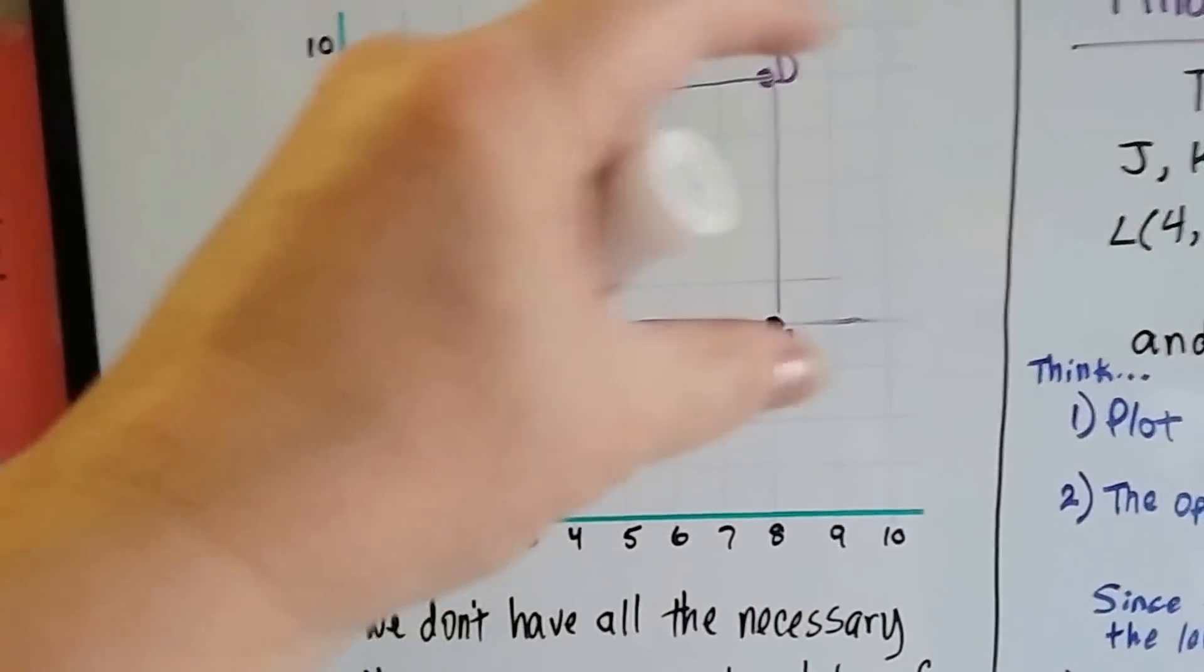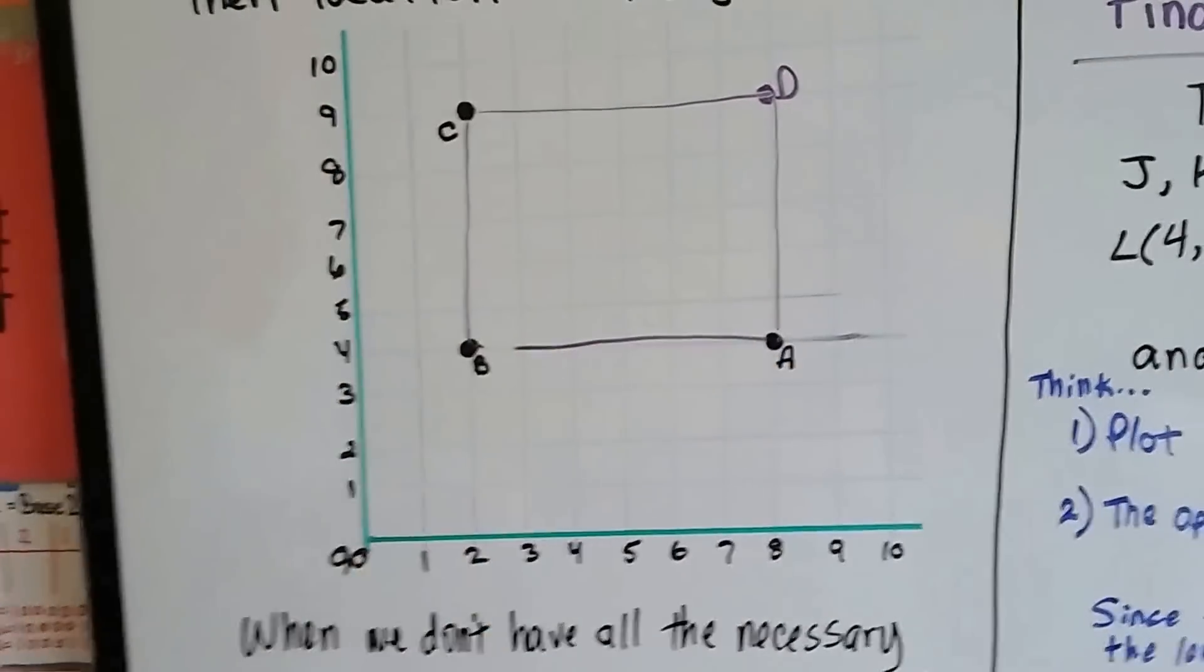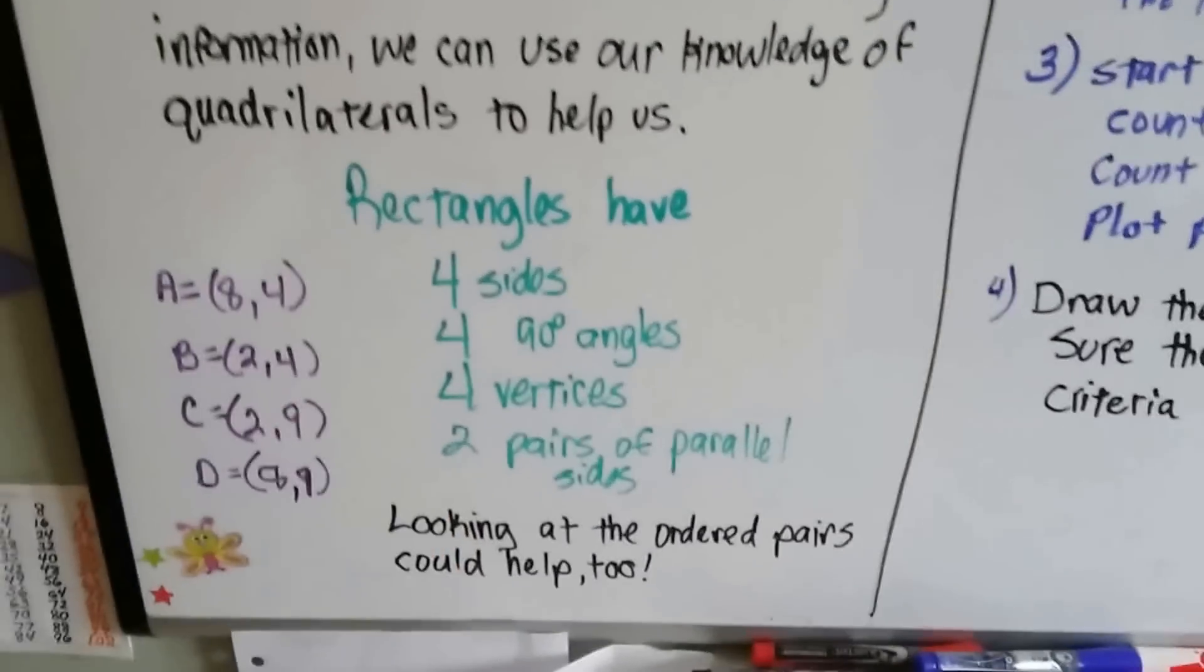So, we could actually plot D at 8 comma 9 and connect them with a ruler and see that we've got it right. And it follows the rules for the quadrilateral. For the rectangle, there's two parallel sides. It's got 90-degree angles. So, by following this, it helped.